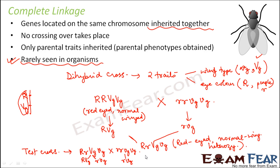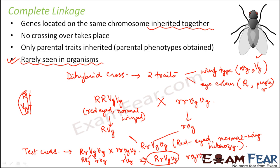When these recombine, the final output is either capital R small r, capital Vg small vg — or small r small vg, small r small vg. So one type of offspring is red-eyed normal wing, which resembles this parent, and the other is purple-eyed vestigial wing, which resembles this parent.